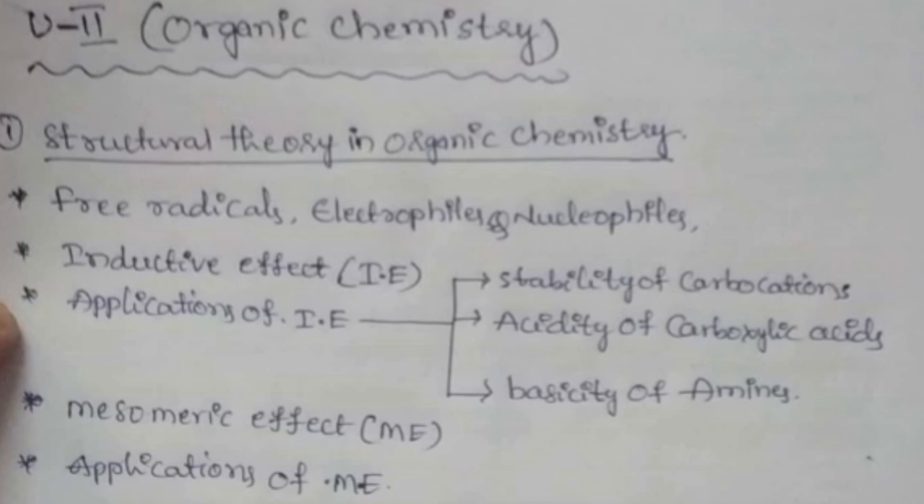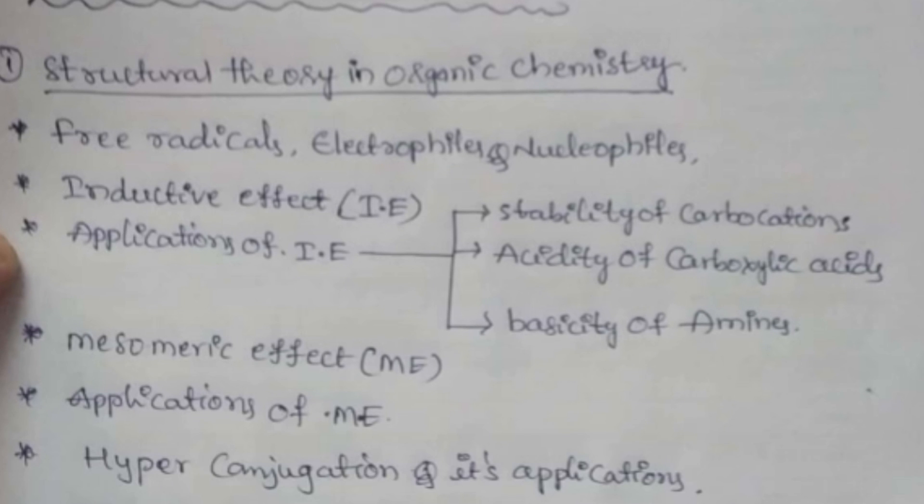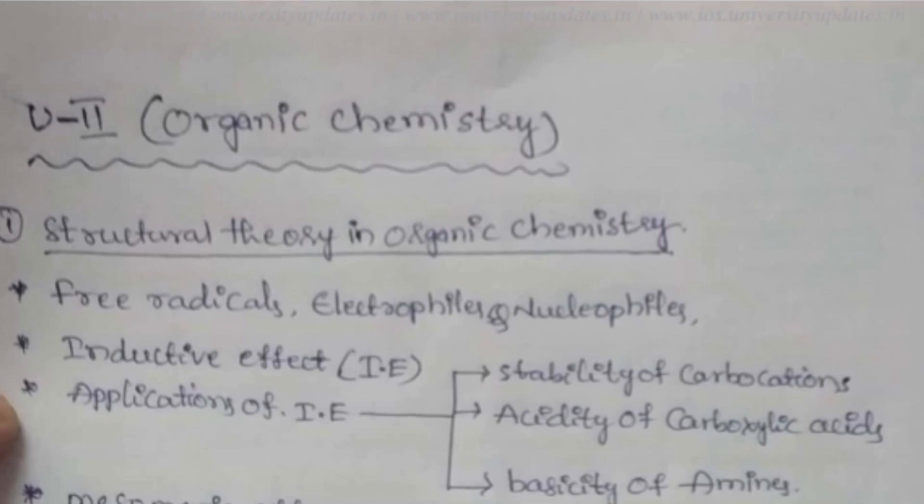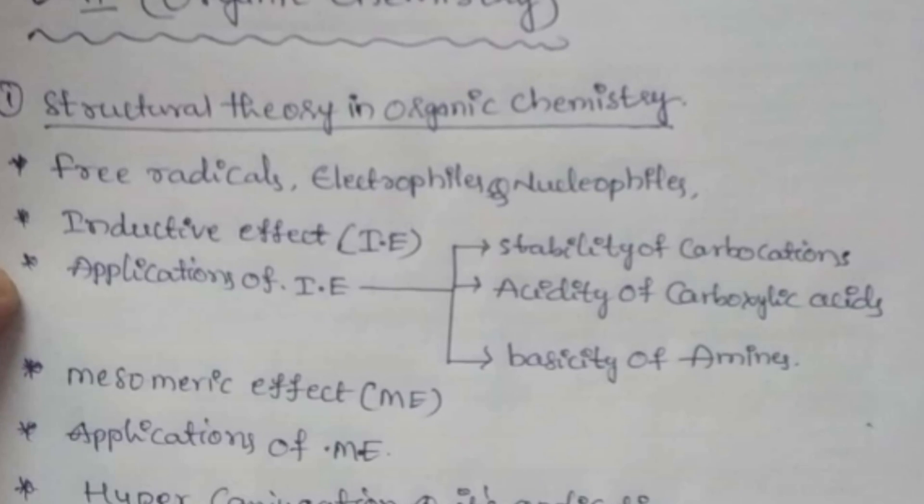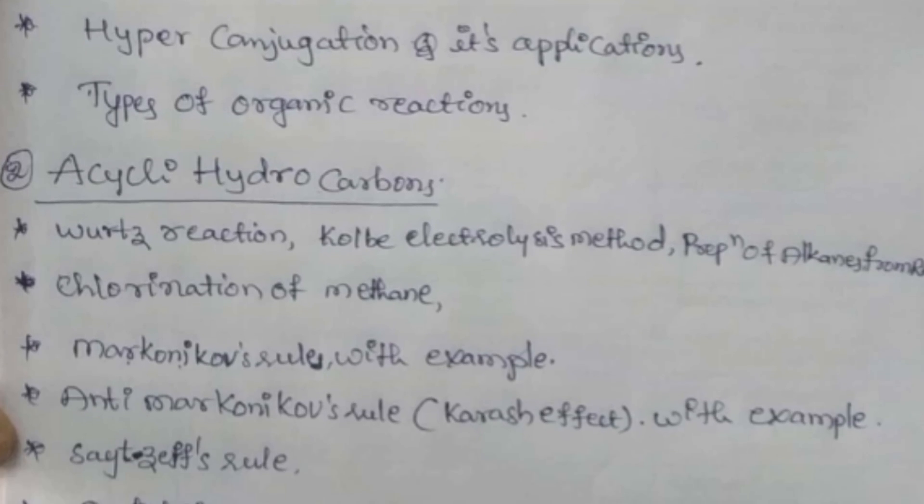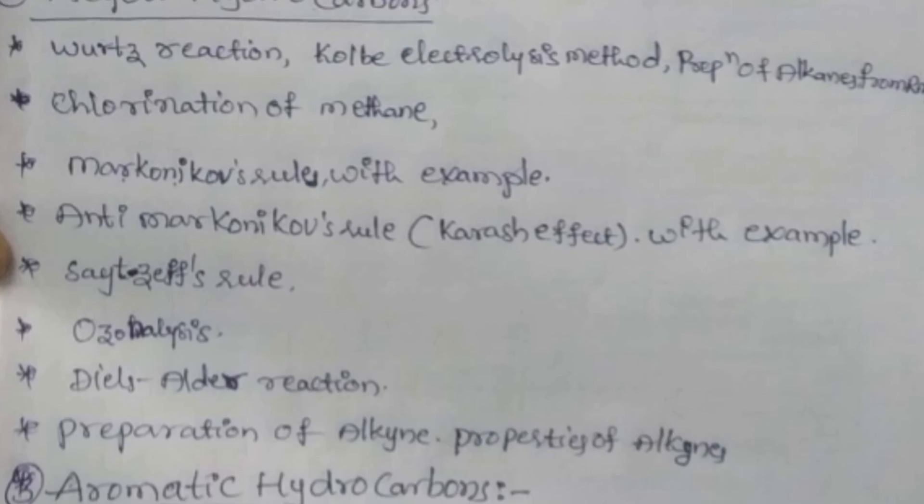So this is Unit Number 2, that is Organic Chemistry. This is the unit name: Structural Theory in Organic Chemistry. What are the things you are having? You need to learn all these things, so it will be helpful to you. Just I'll scroll down this video so you can make note of it.